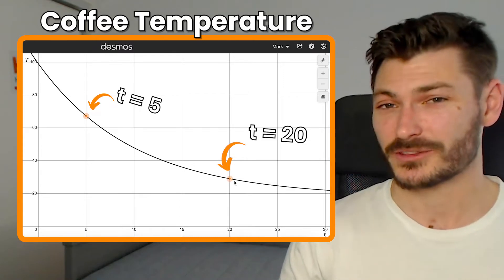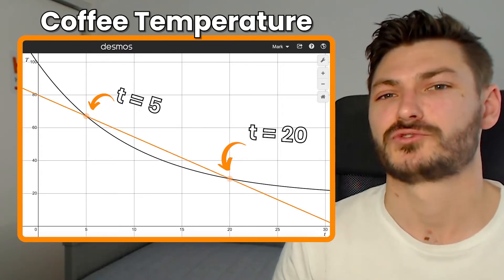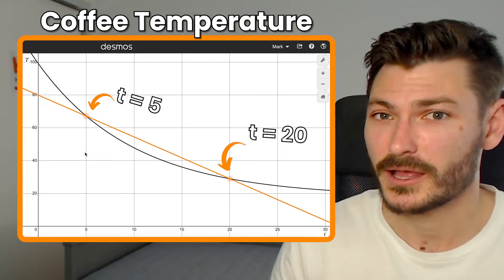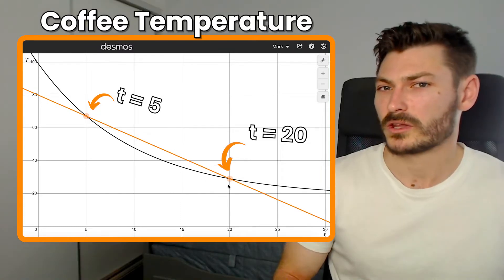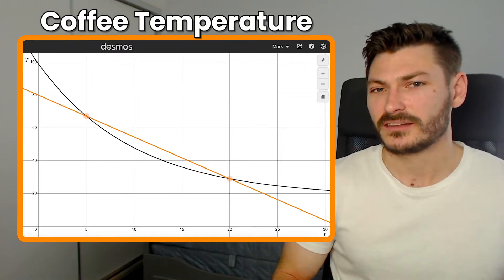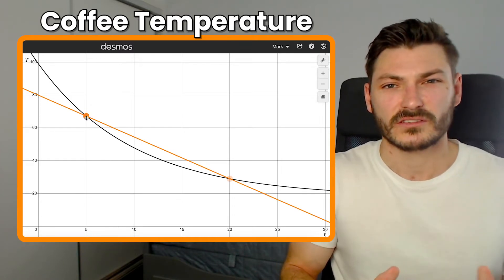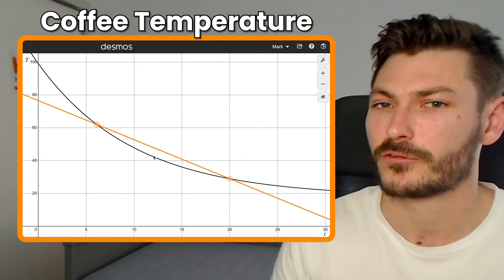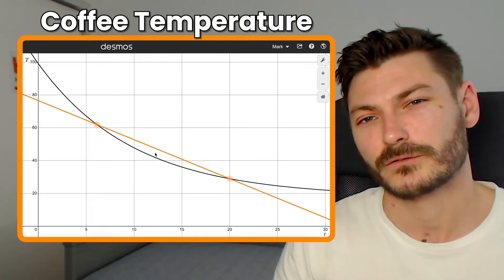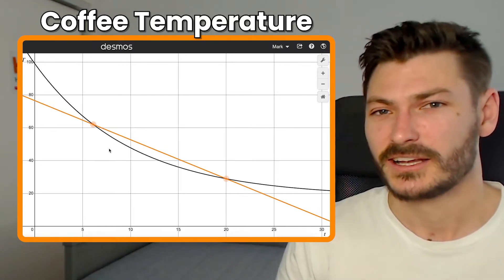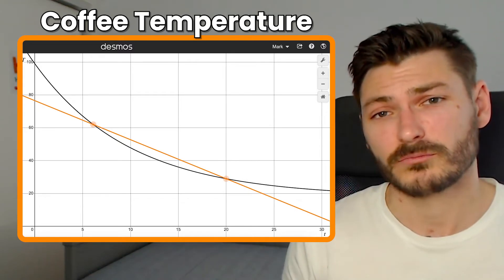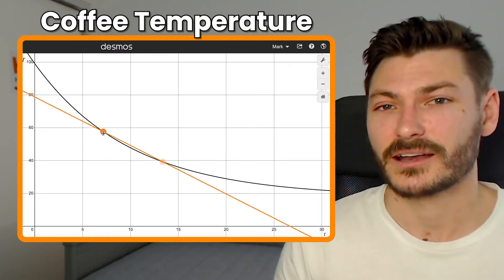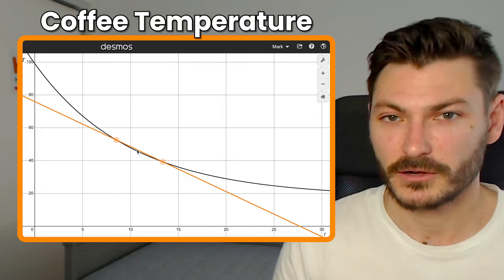Now that we have those two points, if we connect them with a line we can represent the average rate of change of temperature between those two points — it's going down in temperature by a certain amount. If we however bring those points closer together, you can see that the difference between the line and the curve starts to get smaller. The line through two far-apart points is not a very good representation of the curve, so we can bring those time periods much closer together, and as we do the line starts to represent the curve even better.